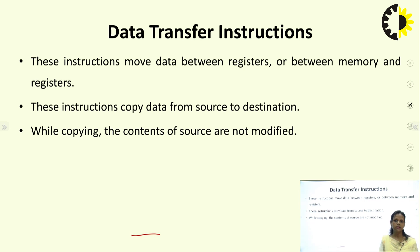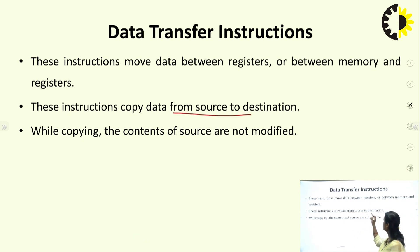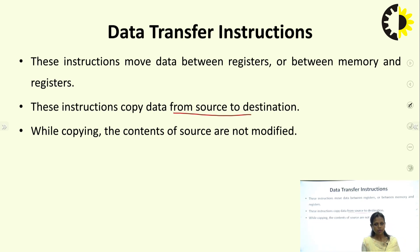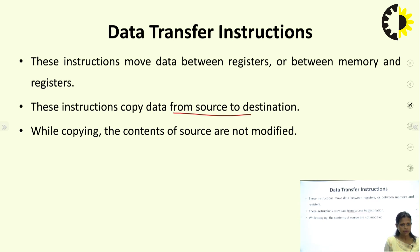Now, coming to the data transfer instructions. These instructions move data between registers or between memory and registers. They copy data from source to destination. You can transfer data from one register to another, from register to memory, or from memory to register. The important thing is that while copying, the content of the source is not modified.